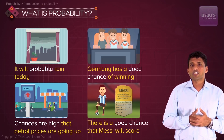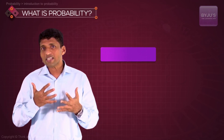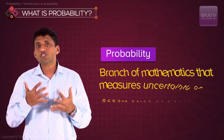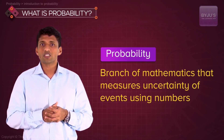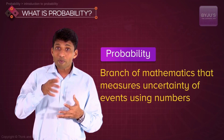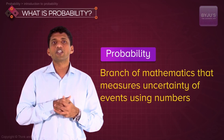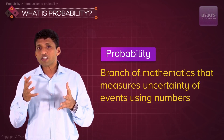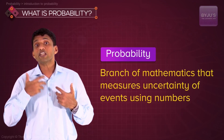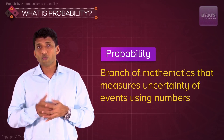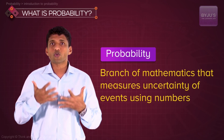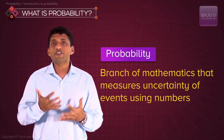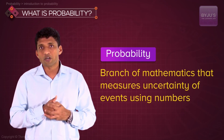We are only using words here, right? So probability is actually a branch of mathematics to measure this uncertainty of events using numbers. In math, obviously, we'll end up using numbers.